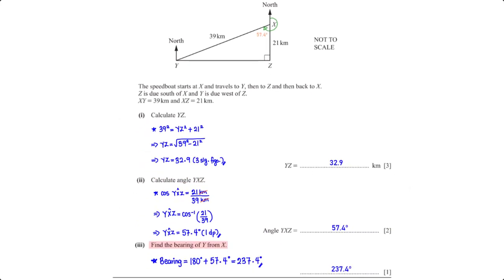Find the bearing of Y from X. Angles on a straight line add up to 180 degrees, so the bearing equals 180 degrees plus 57.4 degrees, which gives 237.4 degrees.